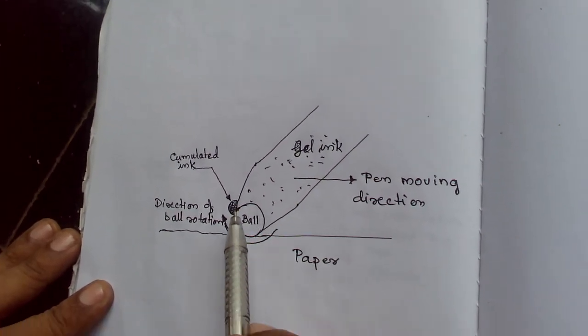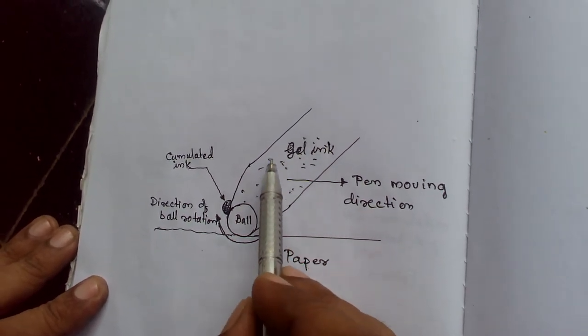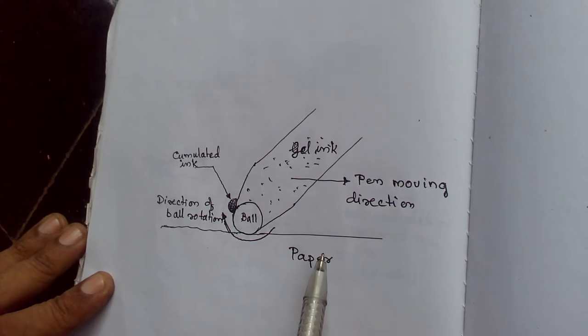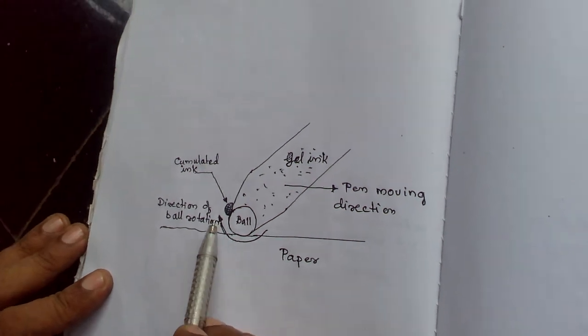This is the pen. This is the ball at the tip of the pen. Here the gel ink is filled. This is the movement of the pen. Your paper is here. While moving the pen in this direction, the ball will rotate like this.